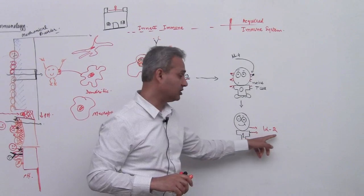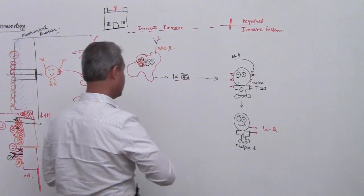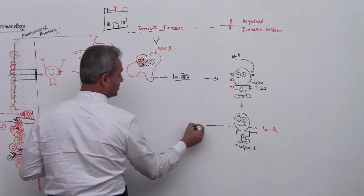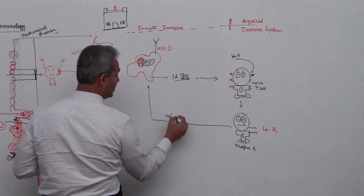They receive the IL-12, they immediately got converted into T helper 1. T helper 1 cell in turn starts releasing two things: interleukin 2, very important thing, and gamma interferon.